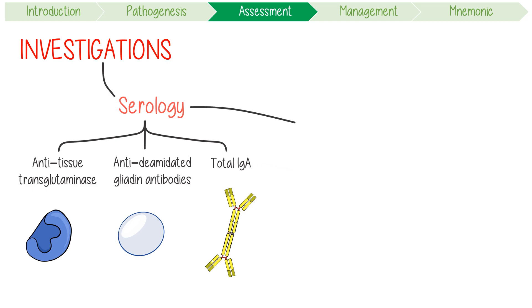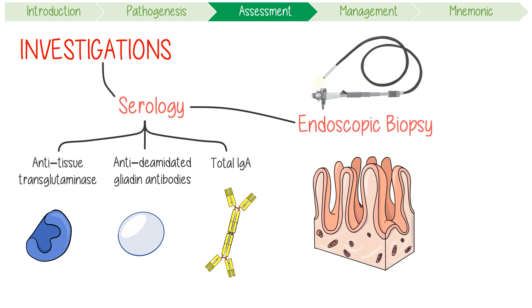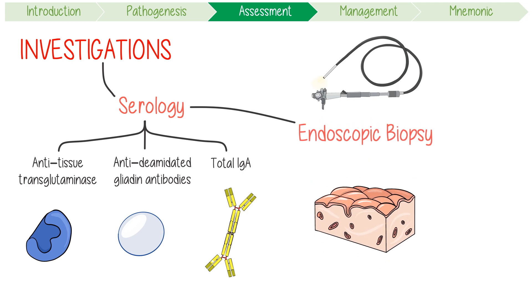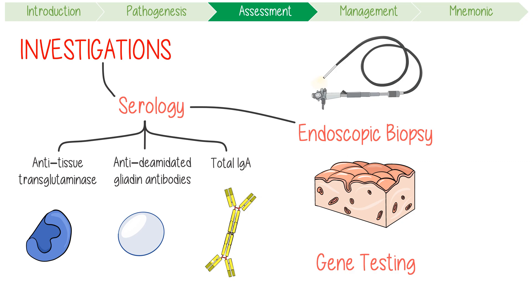If the serology is positive, arrange an endoscopic biopsy of the duodenal mucosa. A diagnosis is confirmed by blunting of the duodenal villi. Gene testing is not an appropriate screening test unless someone is on a gluten-free diet and is unwilling to have exposure to gluten for a month. A positive HLA-DQ2 or DQ8 is not diagnostic, but it can exclude the disease if negative.